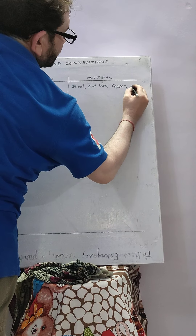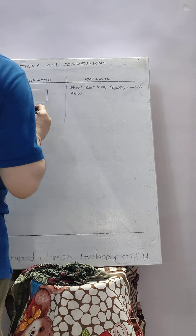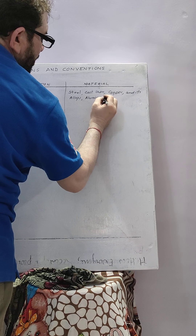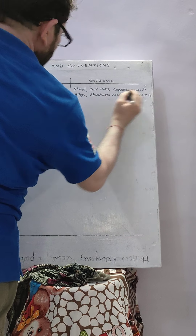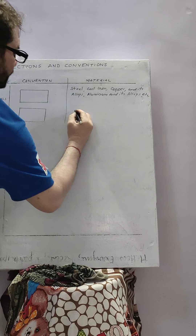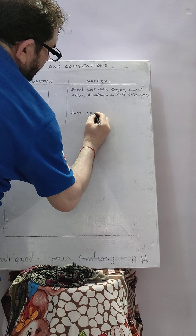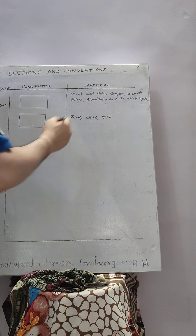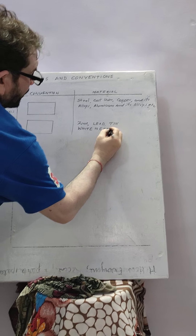Under metals, we have copper and its alloys, aluminum and its alloys, zinc, lead, tin, white metal, etc.